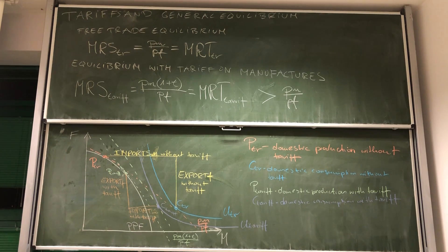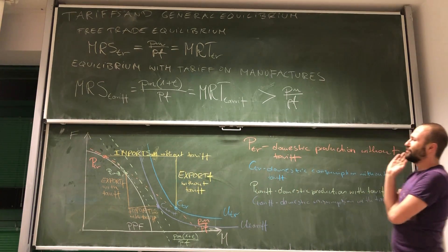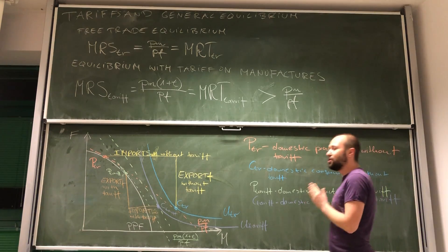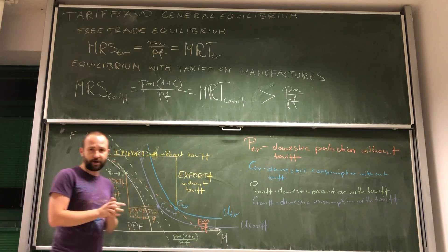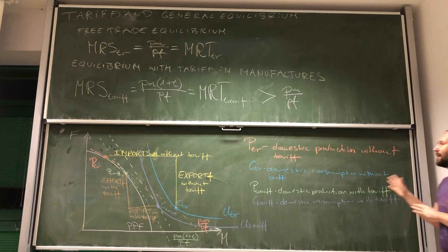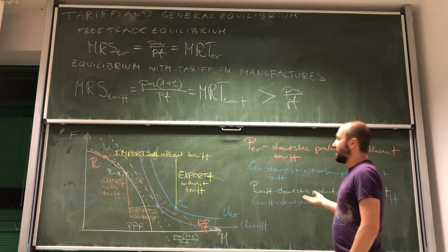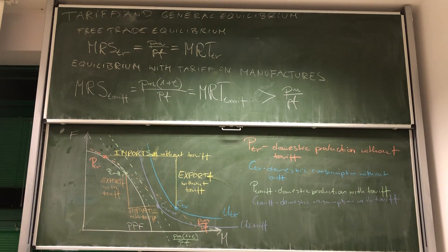But you can already see that even with one country, this graph is getting very, very messy very fast. So in the next video we're going to introduce a new tool called the Offer Curve. The Offer Curve will allow us to show the effects of tariff — even those positive effects that can take place for big countries — with way more ease and without all this mess that we can see in this graph. See you in the next video.